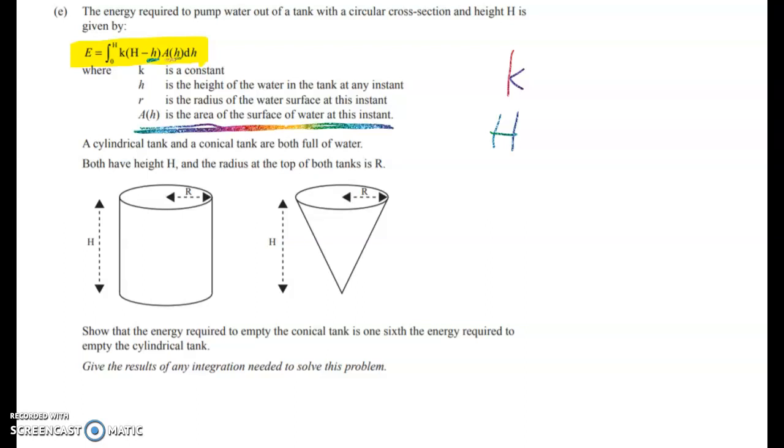We've got a cylindrical tank and we've got a conical tank. So we know that the surface area of the water in each of those is going to be a circle. The area of a circle is pi r squared. But there's a big difference between the two tanks.